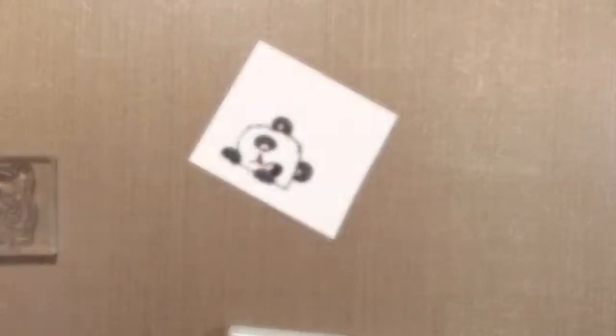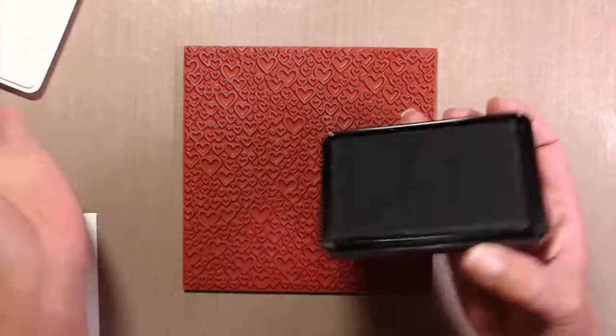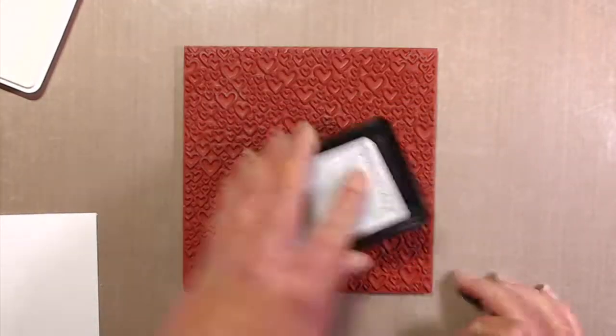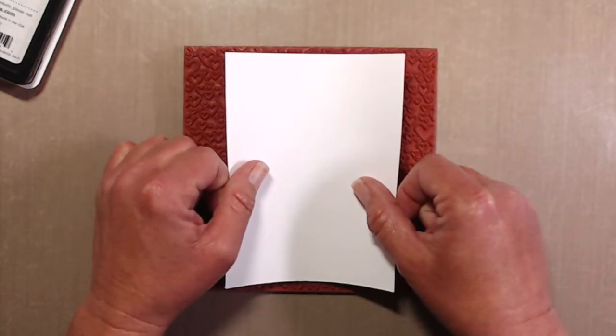For the background, I used the Bursting with Love background stamp from Hero Arts. I inked that up with cement gray hybrid ink from My Favorite Things. Then I placed my cardstock on top of the stamp so that I could make sure that I got a really good impression.